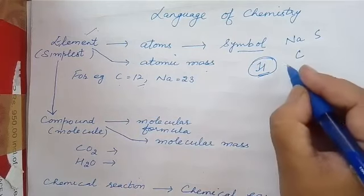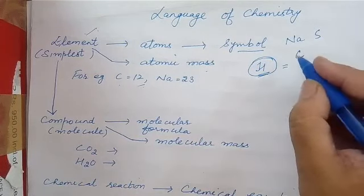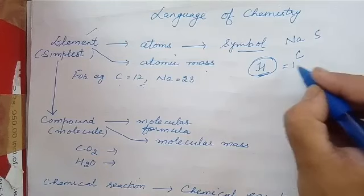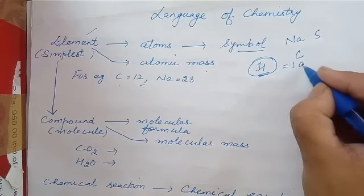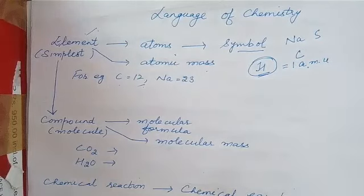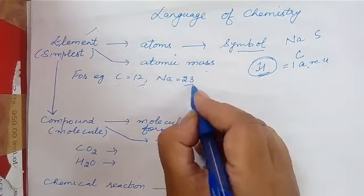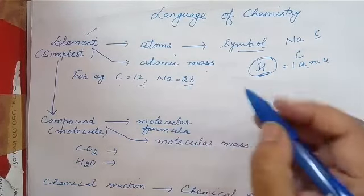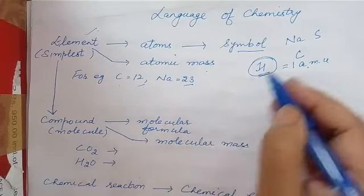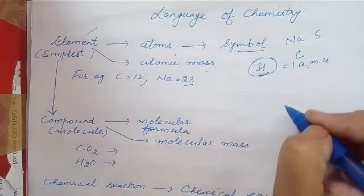Hydrogen is the simplest element with the least atomic mass, that is one atomic mass unit. So if sodium's atomic mass is 23, that means sodium is 23 times heavier than one atom of hydrogen.